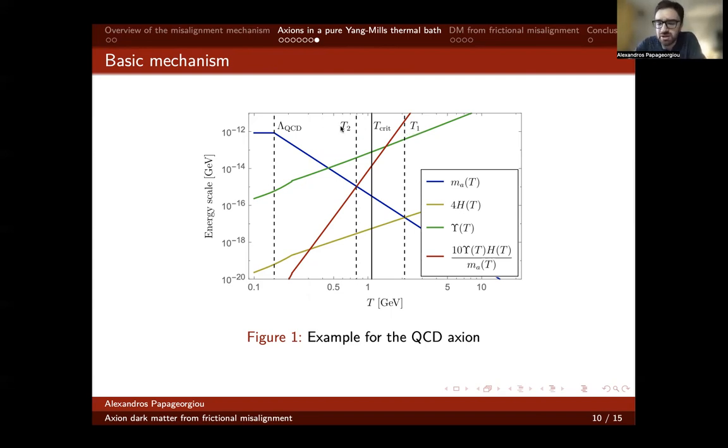From temperature T2 onwards, the energy of the axion is rapidly and exponentially diluted. The idea is that we can separate these two effects, enhancement and dilution, by assuming spontaneous symmetry breaking. If spontaneous symmetry breaking occurs between temperatures T1 and T2, we get the enhancement without paying the price of the dilution.